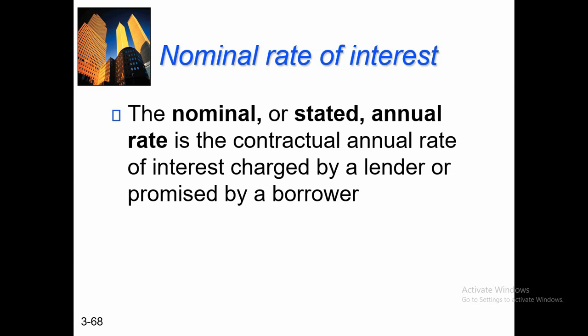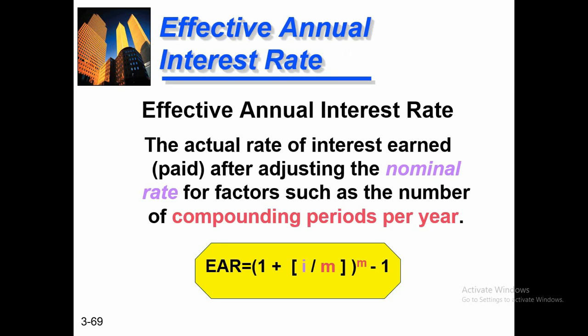Here is the concept of nominal rate of interest. The nominal or stated annual rate is the contractual annual rate of interest charged by a lender or promised by a borrower. For example, if I deposit $100 in a bank and the bank offers 7% interest, after one year I will get $107. That 7% is my nominal or stated interest rate, also called the annual rate of interest.